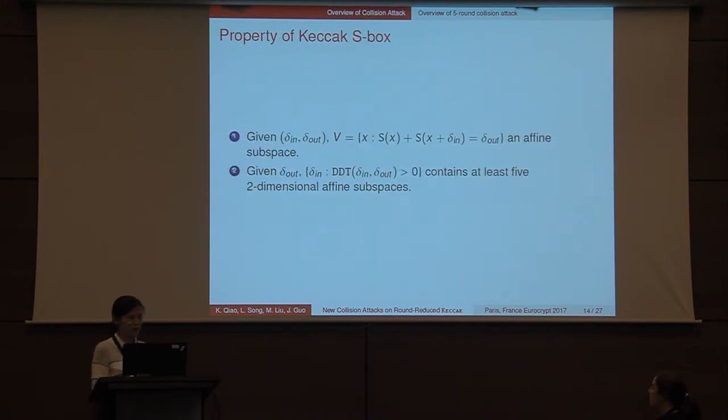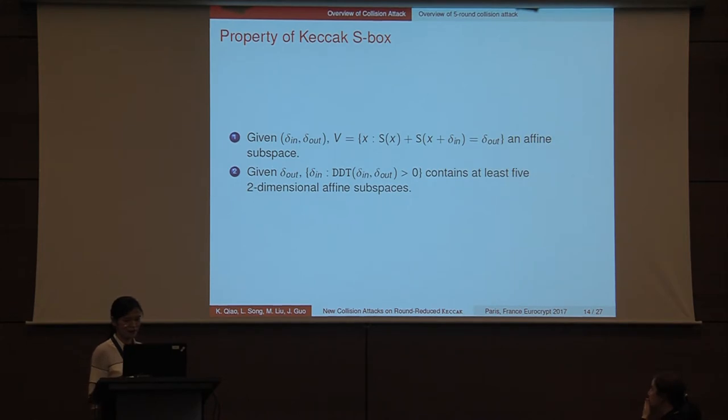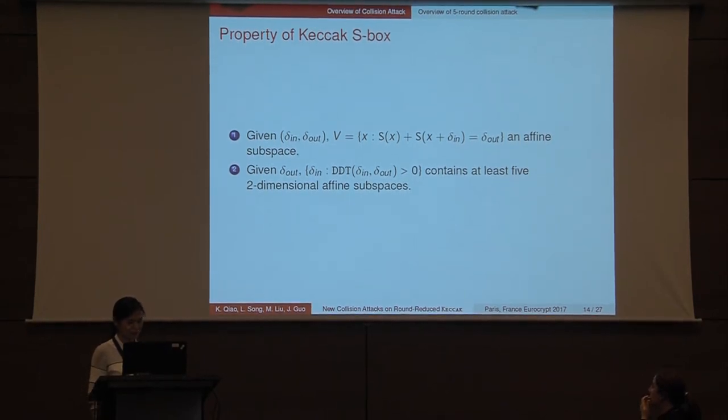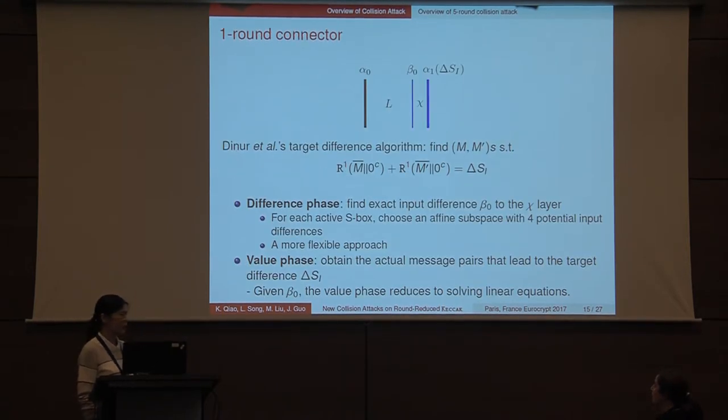Some previously studied properties of Keccak S-box can help. Firstly, given the input-output difference delta in, delta out, the set of all input values that satisfy the differences is an affine subspace. Secondly, given the output difference delta out, the set of all compatible input differences contains at least five two-dimensional affine subspaces. Based on these properties,